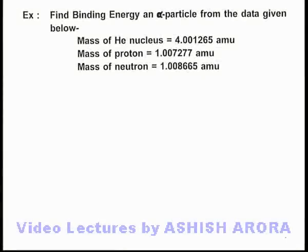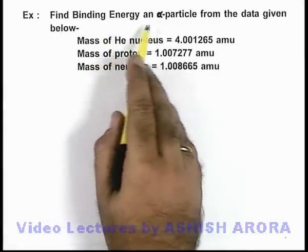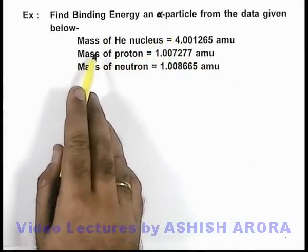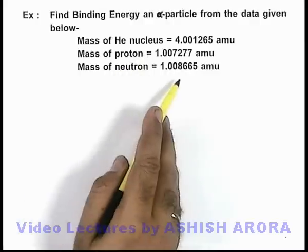In this example, we are required to find the binding energy of an alpha particle from the data given below. Here we are given the mass of helium nucleus, that of proton, and neutron.